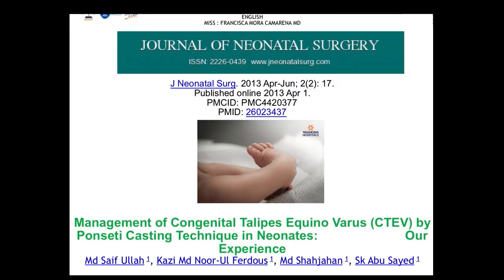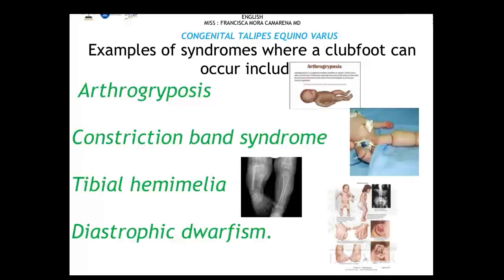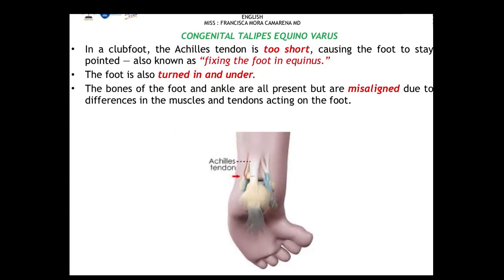Our next topic is club foot, known as congenital talipes equinovarus. Syndromes associated with club foot include arthrogryposis, constriction band syndrome, tibial hemimelia, and diastrophic dysplasia. In this condition, the Achilles tendon is too short, causing the foot to stay pointed — fixed in equinus — and turned inward and under. All bones of the foot and ankle are present but misaligned due to differences in the muscles and tendons acting on the foot.